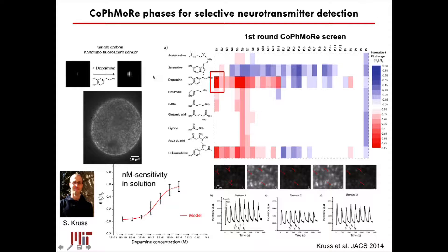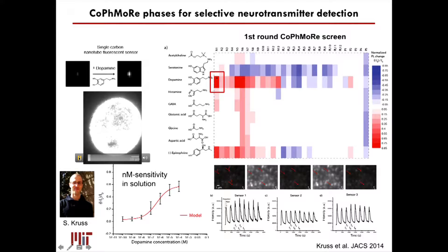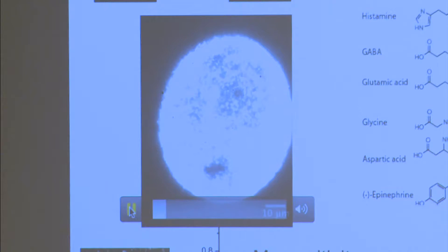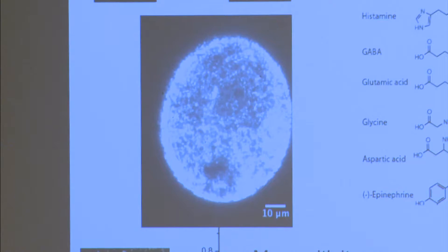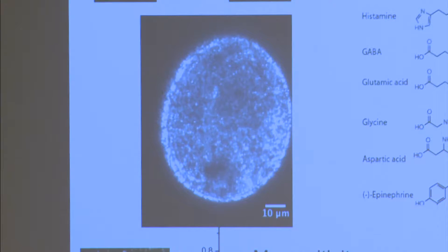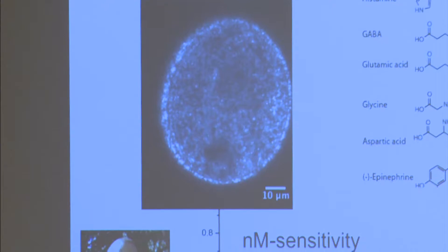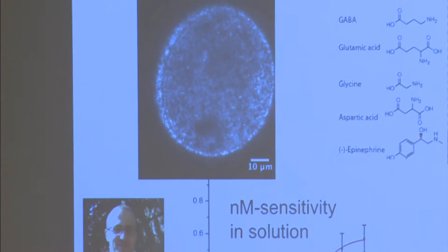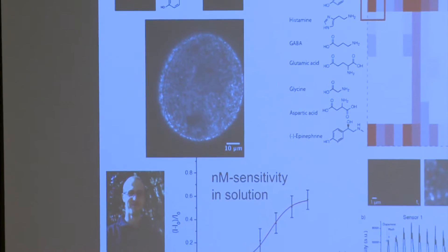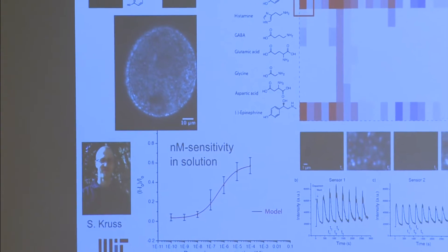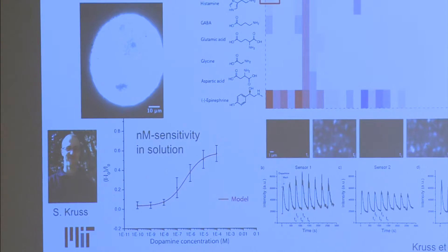These are fluorescent carbon nanotubes dispersed on a surface. If you add one micromolar of dopamine, you see a very bright turn-on response, and you can cycle this repeatedly. Each nanometer-scale particle gives an independent, exquisitely sensitive sensor for dopamine, which goes down to the single molecule — it has a single molecule detection limit.